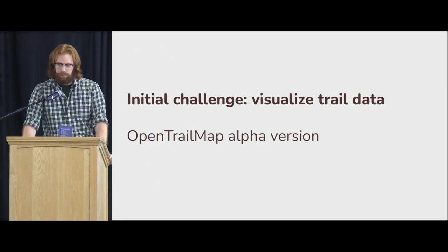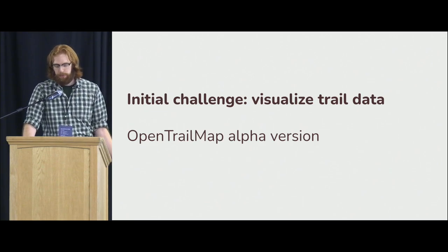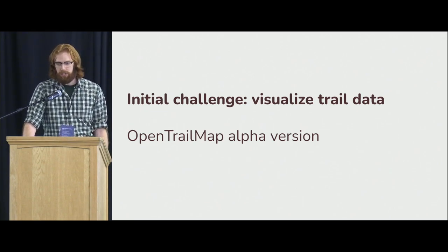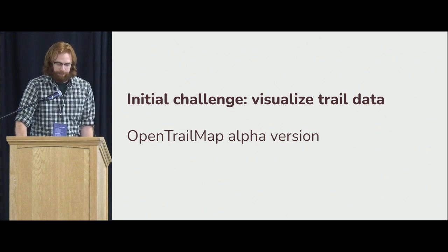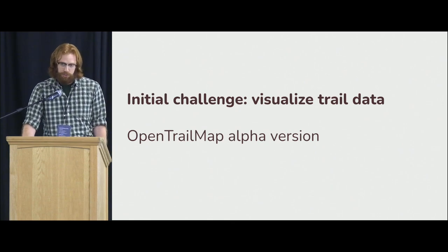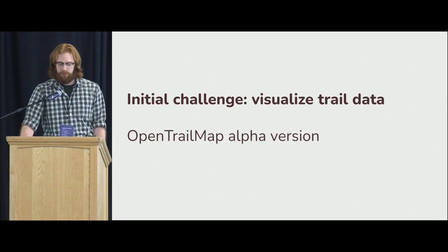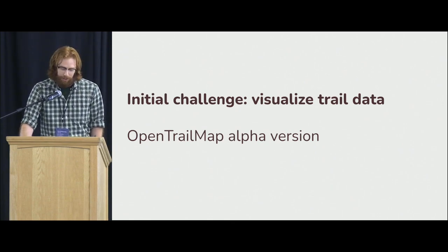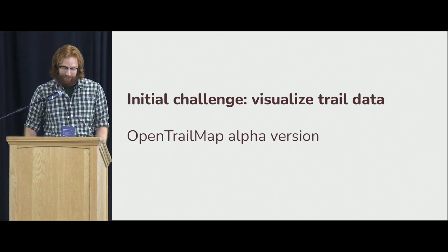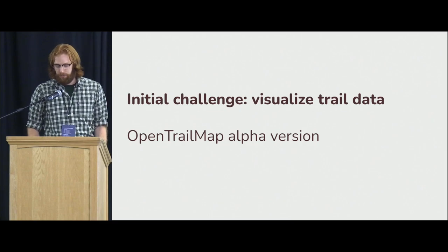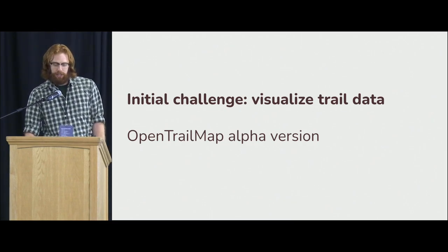As sort of a challenge to ourselves, we thought: how do we visualize this trail data? How do we make it easier for people to see what's been done and what needs to be done? Why not make a map? So I've built OpenTrailMap. Maggie called it beta earlier — I would call it alpha. It's really just something I threw together and there's still a lot of room for improvement, but the first step was just visualizing the data.